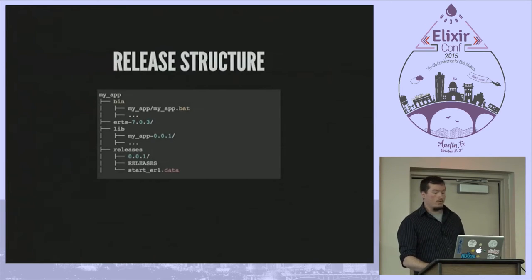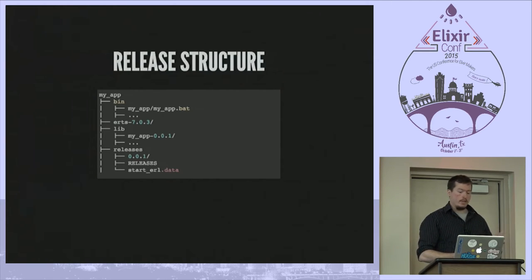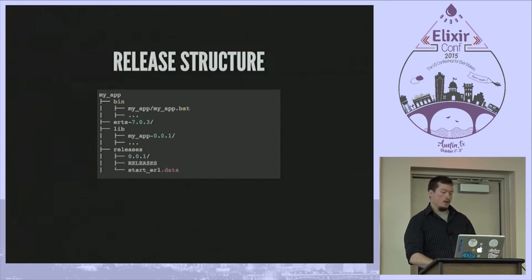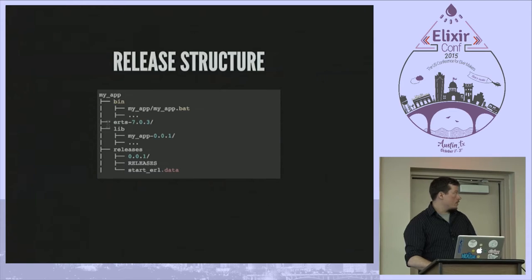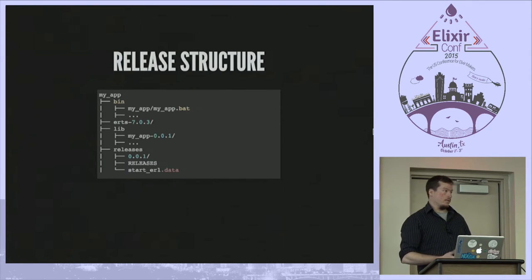Here's a brief overview of what the release structure looks like. At the top level you just have your application. The bin directory includes the boot scripts for starting the app — thin layers that reference the bin directory under releases/version. The ERTS library, if you're including it, will be referenced here with the explicit version. The lib directory contains all the applications and all the beam files, including anything stored in priv. So if you're deploying a Phoenix application, all your assets will be included in there.